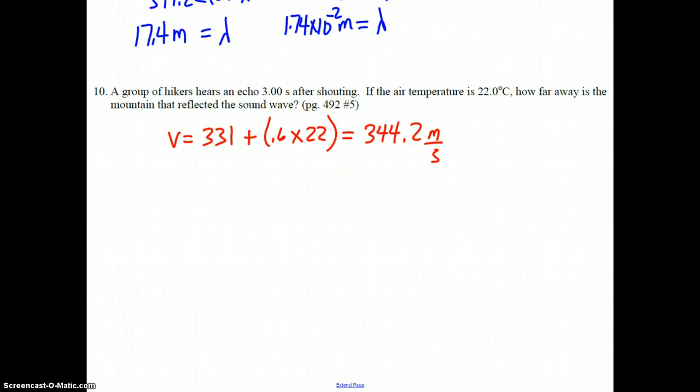This ends up being a simple V equals X over T calculation, where how far away is the distance the mountain is away. We add the time here, kind of. We'll talk about that in a second. And we just calculated the speed. 344.2 equals X over...